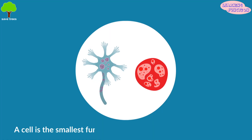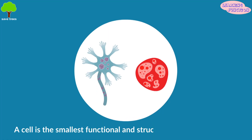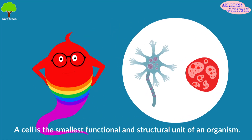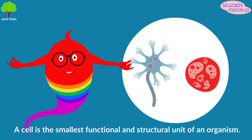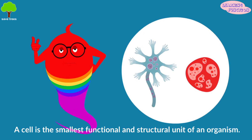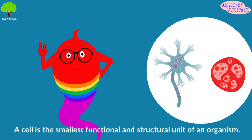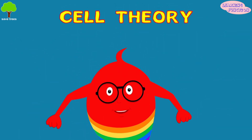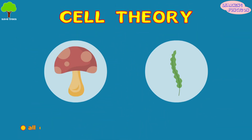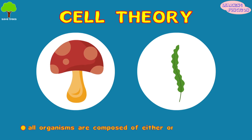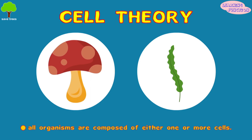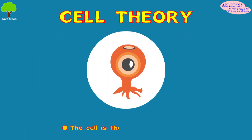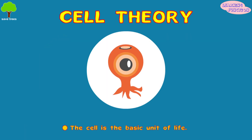A cell is the smallest functional and structural unit of an organism that is capable of carrying out essential life processes. According to the cell theory, all organisms are composed of either one or more cells. The cell is the basic unit of life.